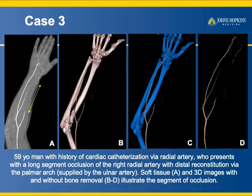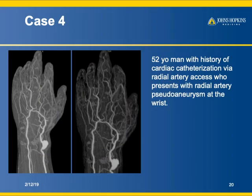Another case: a patient who had cardiac cath via the radial artery now shows a long segment occlusion of the right radial artery with distal reconstitution in the palm of the arch — not artifact, not motion, simply vessel occlusion. With all bones removed, another patient demonstrates a beautiful example of a radial artery pseudoaneurysm in the wrist. Every step from acquiring to processing the images is critical.